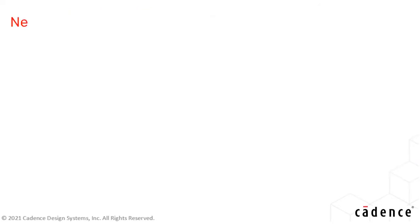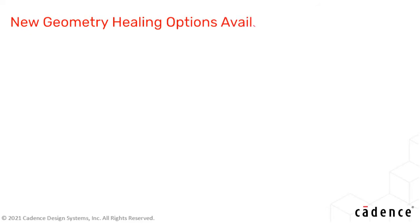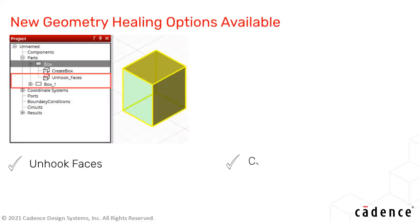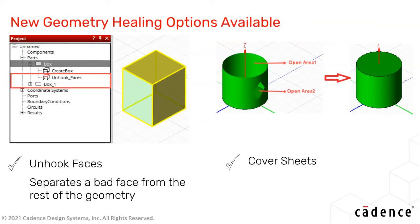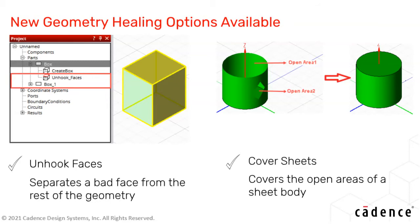Two new options, Unhook Faces and Cover Sheets, have been added in Clarity 3D Workbench that enable you to heal the faces and open areas of imported geometries. The Unhook Faces option separates a bad face from the rest of the geometry, while the Cover Sheets option covers the open areas of a sheet body.